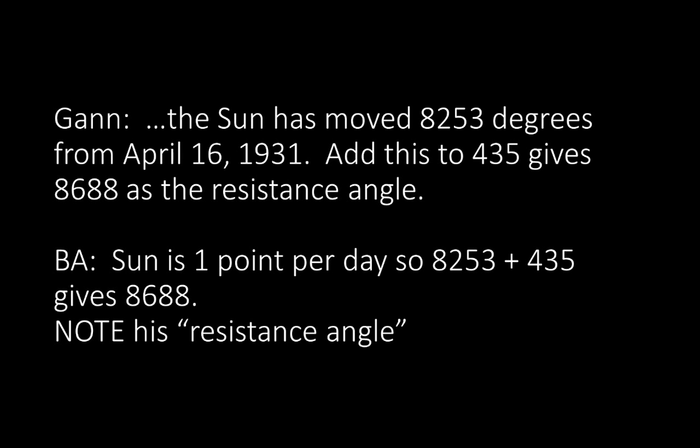And again, the sun has moved 8,253 degrees from April 16, 1931. Add this to 435 gives 8,688 as the resistance angle. Sun is one point per day, so 8,253 plus our 435 low gives 8,688. The sun moves one degree a day — it's one point per day. Note his resistance angle here.